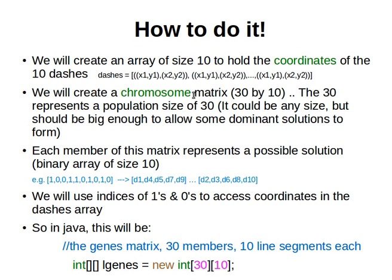After that we'll create a chromosome matrix — this is our population — of size 30 by 10, so it will have 30 candidate solutions. The 30 is the size of the population; it should be big enough to allow dominant solutions to emerge. Each member of this matrix is of size 10, because we have 10 dashes. It will be a binary array of size 10, representing a chromosome — a possible candidate solution.